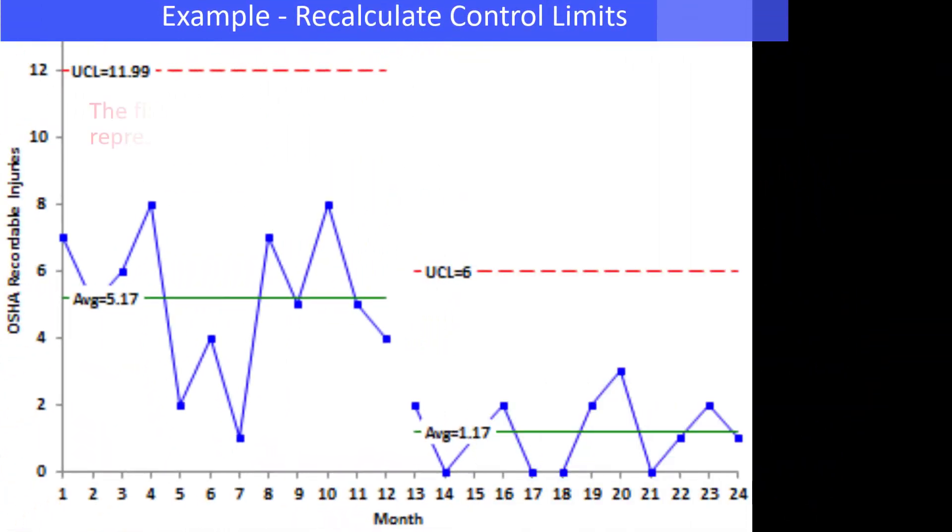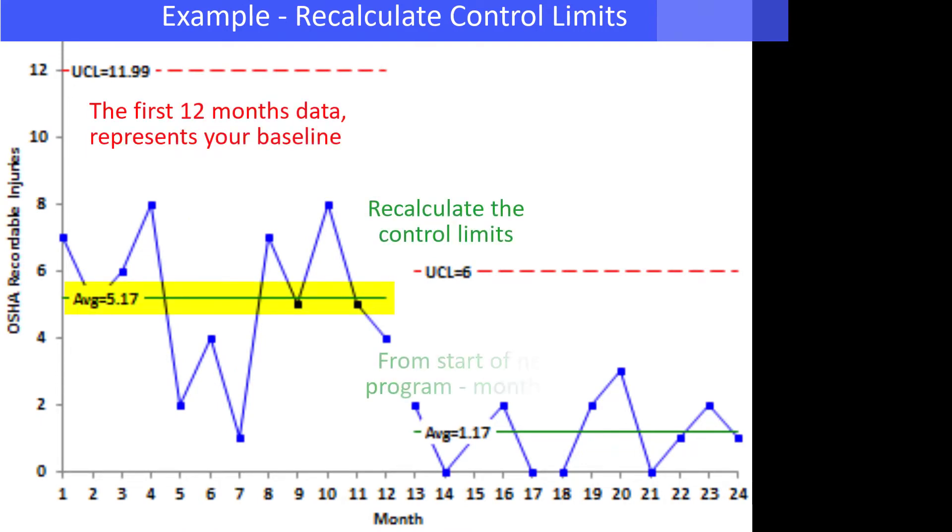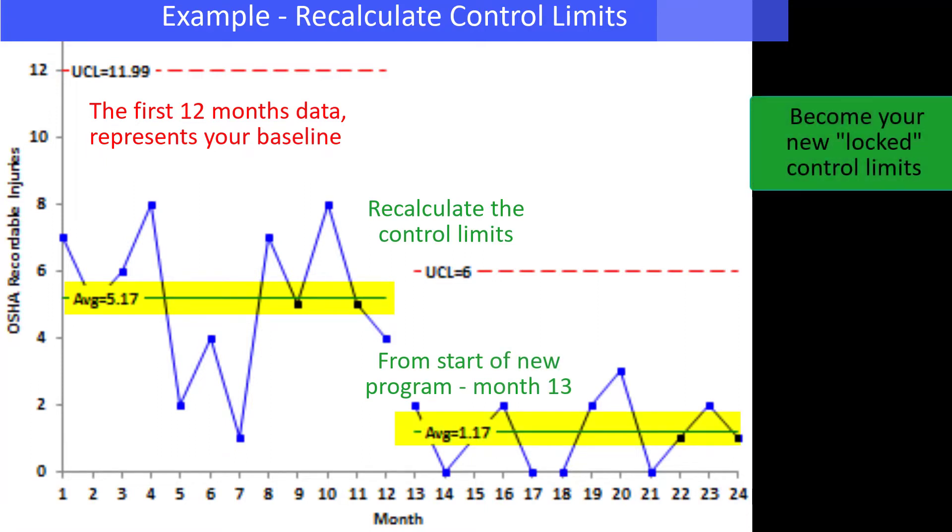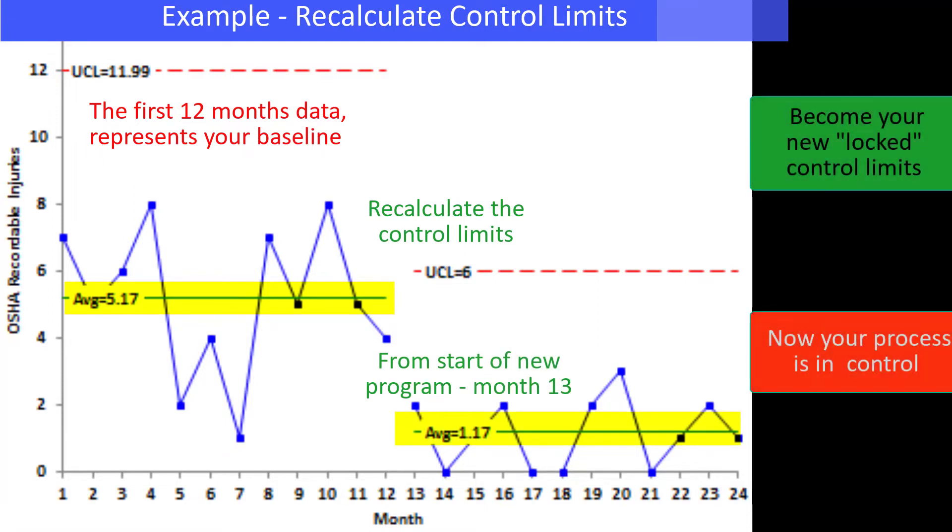So then it's time to recalculate the control limits. Here are the first 12 months of data representing your baseline. And here's your next data. We've recalculated starting with subgroup 13, the new month of the program. And you can see those become now your new locked limits.